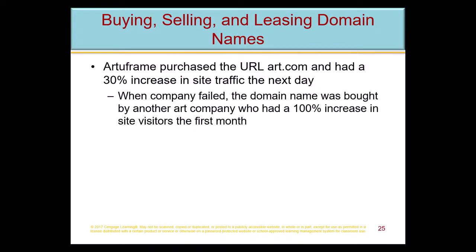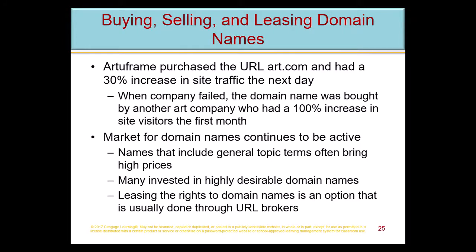For example, art.com: when a company changed from 'art u frame' to art.com, they got a 30% increase in traffic the very next day. When another art company later purchased the art.com domain name, they saw a 100% increase in the first month. So art.com is a pretty good name to have if you're in the art industry.